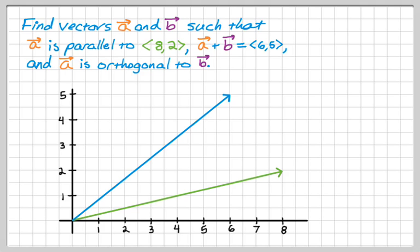So a has to be parallel to the vector <8,2>, and b has to be orthogonal to a, so it's also going to be orthogonal to <8,2>. So I'm trying to keep the colors consistent. That would be b, that would be a, and they're going to form that right angle right there.